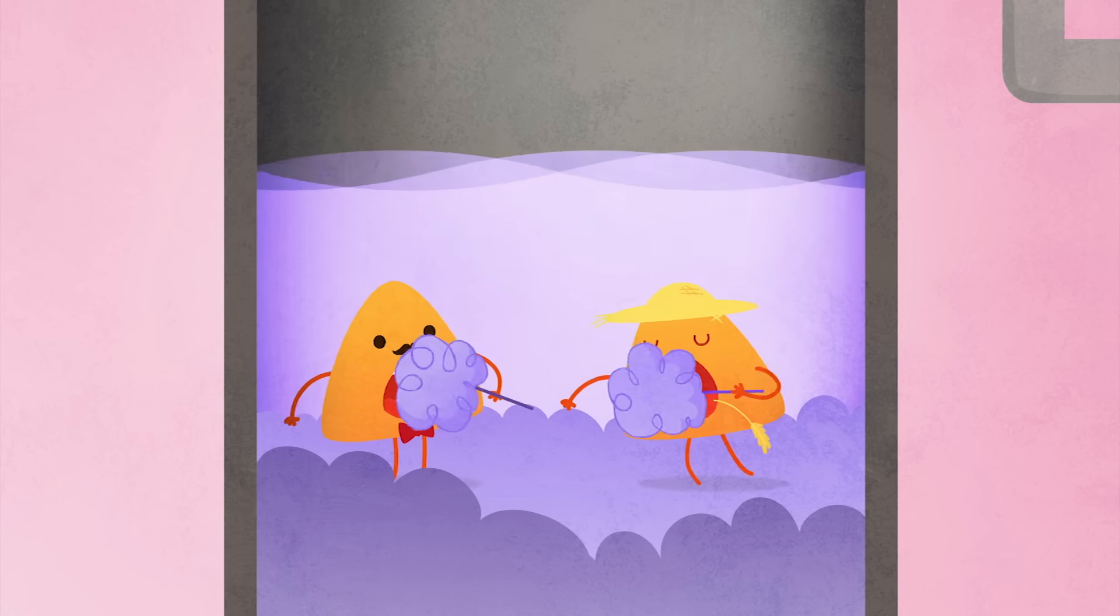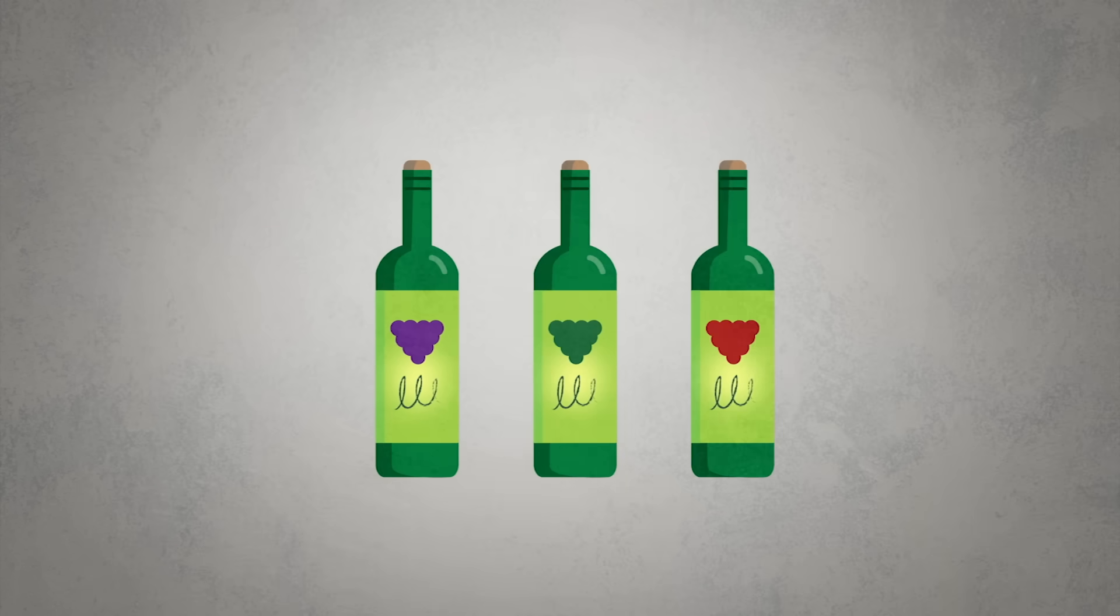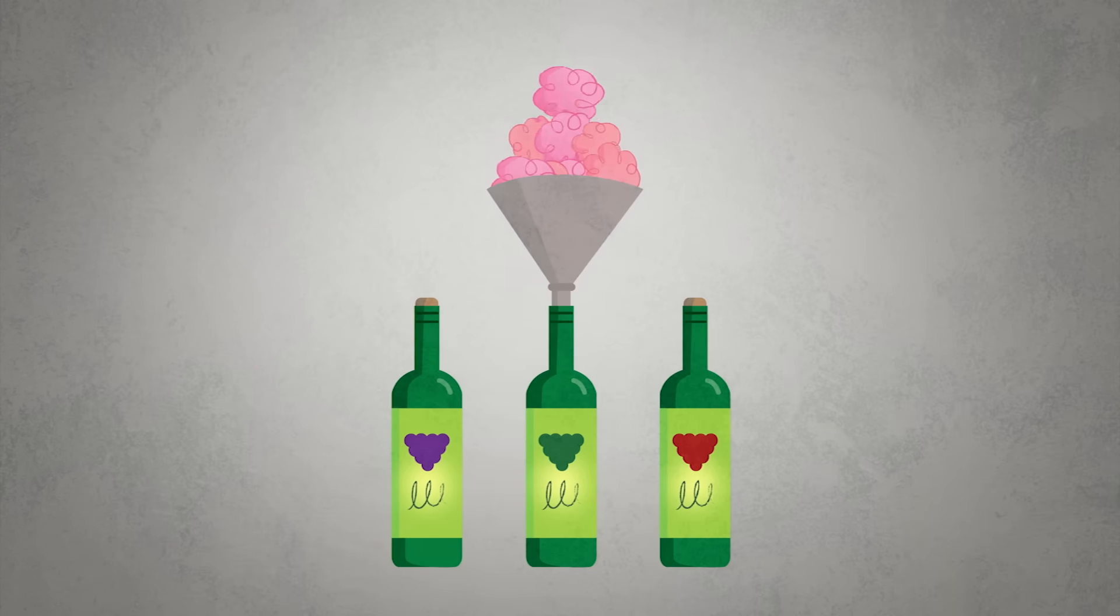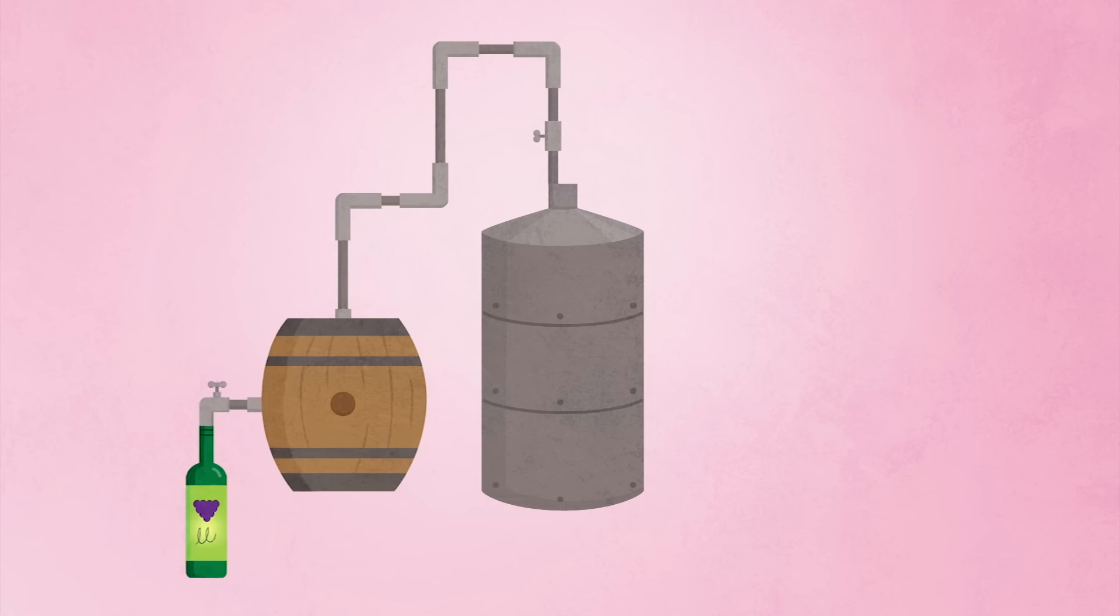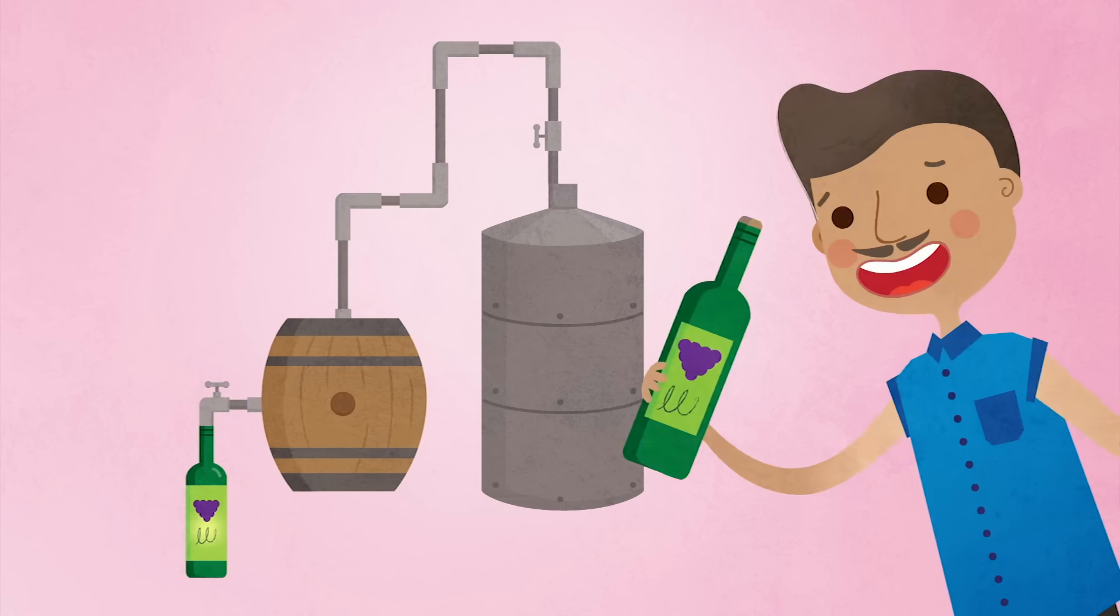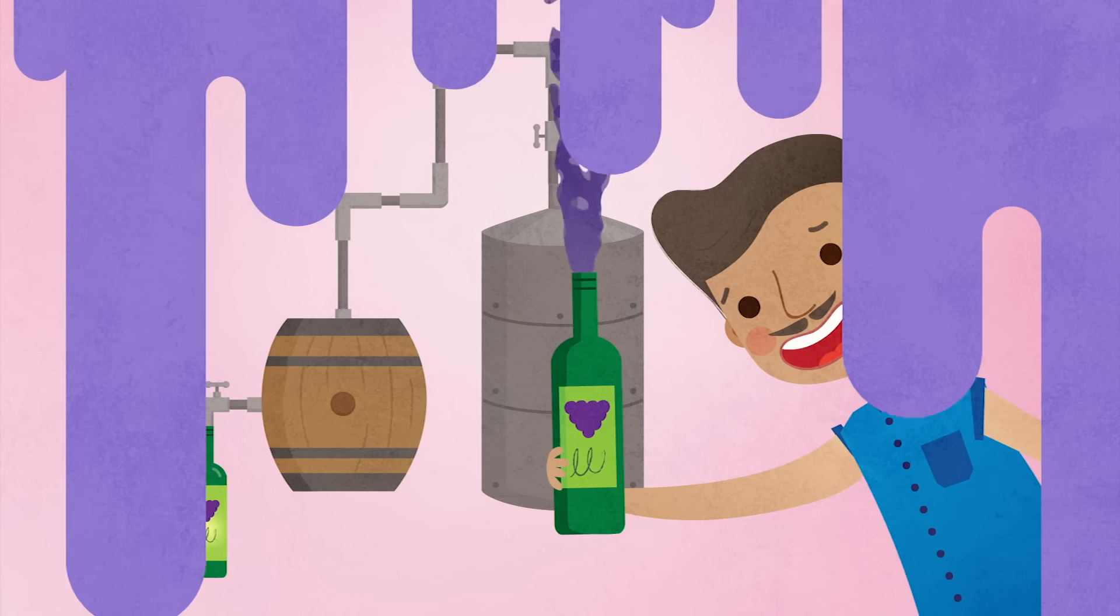This doesn't necessarily mean that sweeter wines have less alcohol. Different types of grapes start with different amounts of sugar, and sugar can also be added. What happens to the carbon dioxide? It just bubbles away through a vent. In carbonated alcoholic beverages like champagne and beer, sealed containers are used in primary or secondary fermentation to keep the carbon dioxide in the bottle.